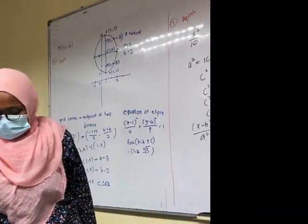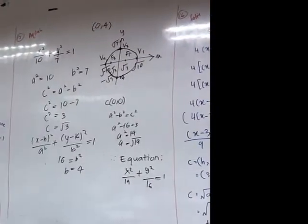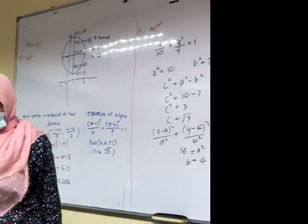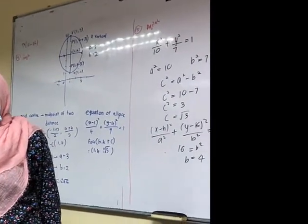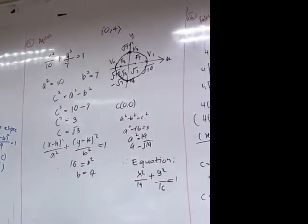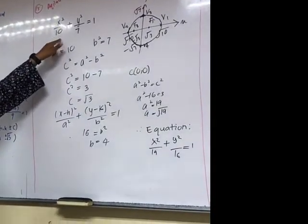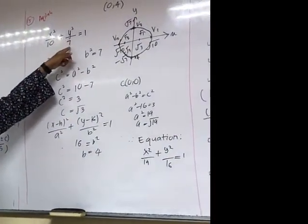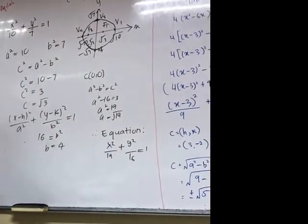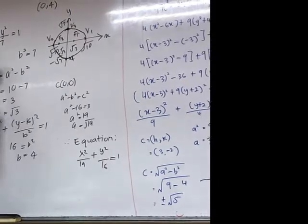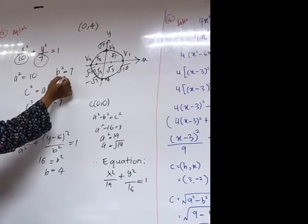The equation given, an ellipse passing through (0, 4) shares the same focus with the ellipse x²/10 + y²/7 = 1. Find the equation of this ellipse. It gives us x²/10 + y²/7 = 1. So we know its a² is 10. So we equate it, we get 10. Then b² we get 7.